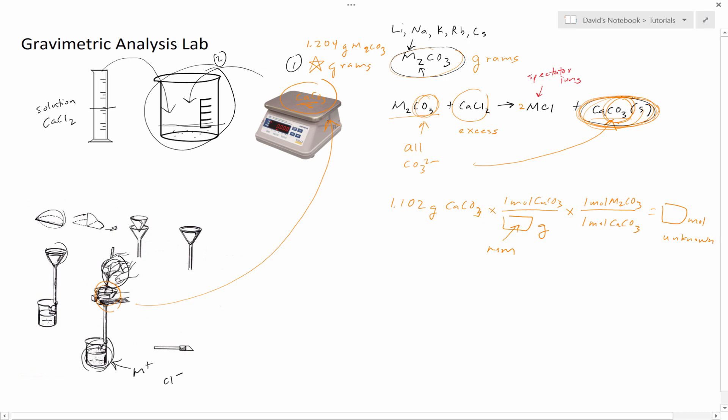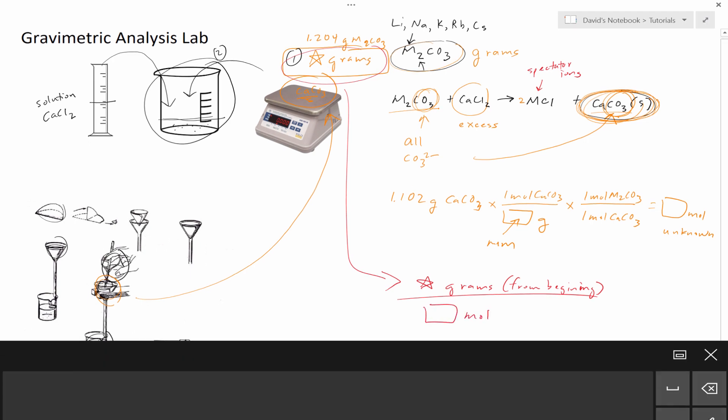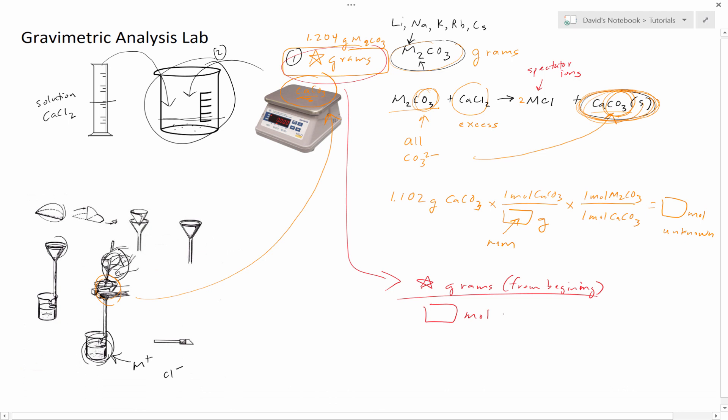Since we weighed it at the beginning, we actually have this from the beginning. What we do is take this number and get whatever grams it was from the beginning, and then divide that by moles of the unknown. So we have grams of unknown divided by moles of unknown. And then grams over mole will give us the molar mass of our unknown.